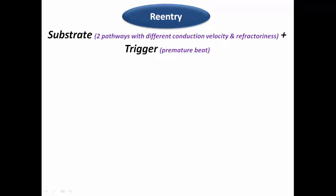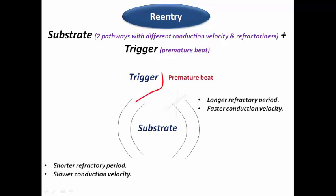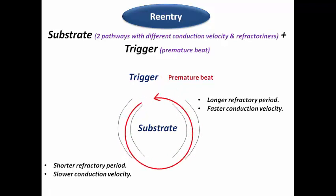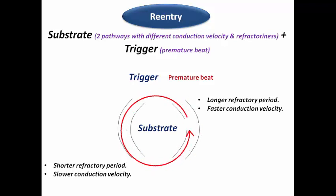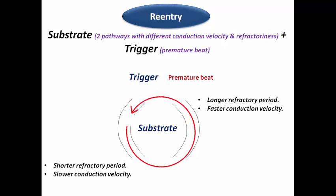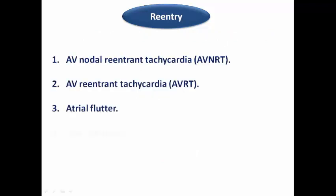For re-entry, the impulse passes antegrade in the pathway with a shorter refractory period and slower conduction velocity, until it reaches the tail of the other pathway — which has a longer refractory period and faster conduction velocity — which has now recovered from refractoriness, resulting in a re-entrant circuit. Examples include AVNRT, AVRT, atrial flutter, scar-related VT, and fascicular VT.